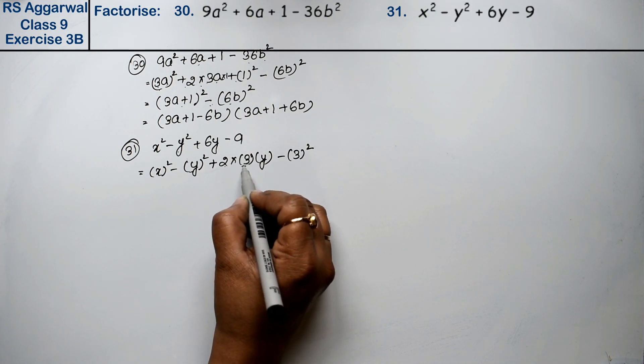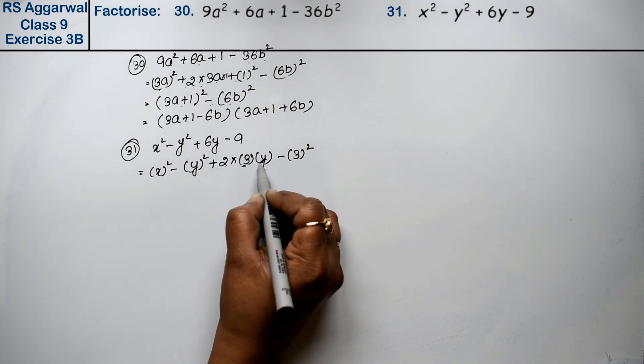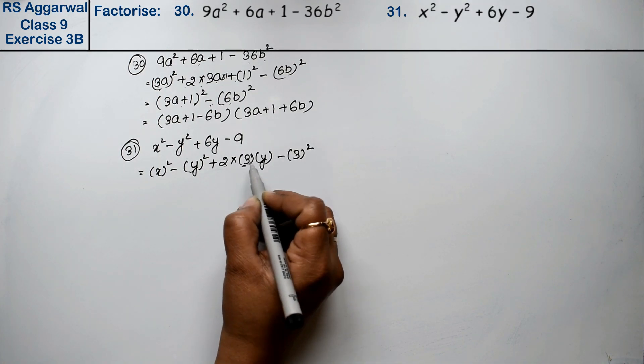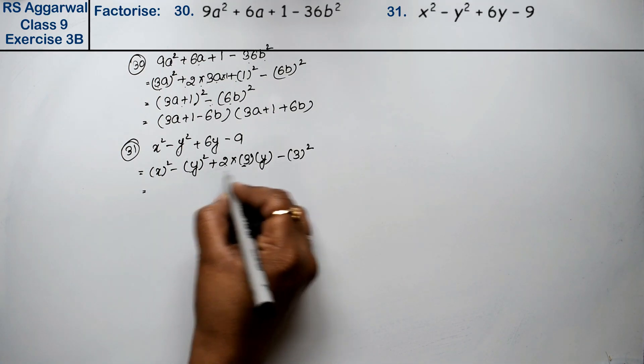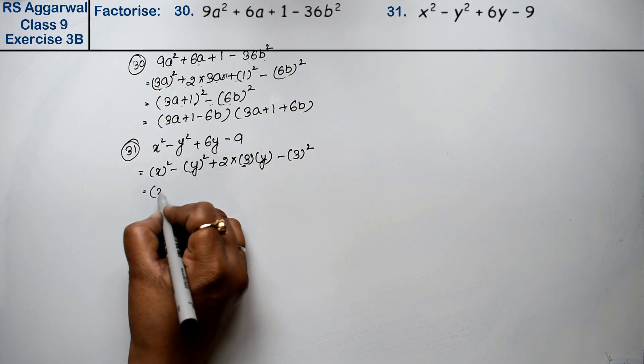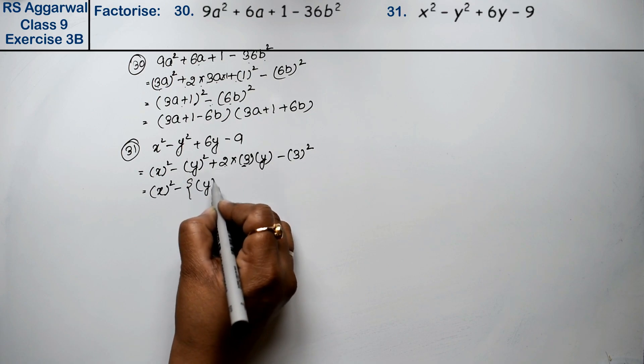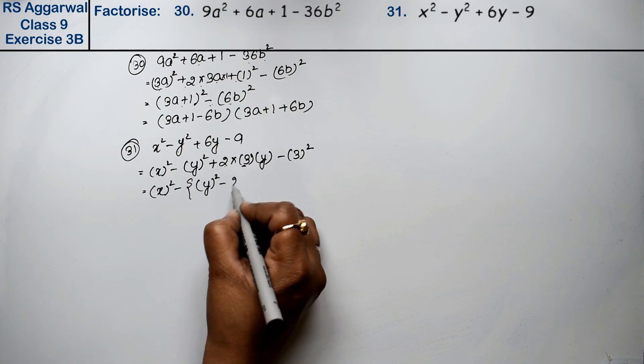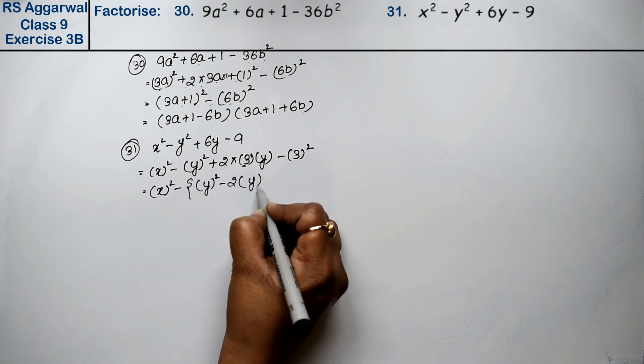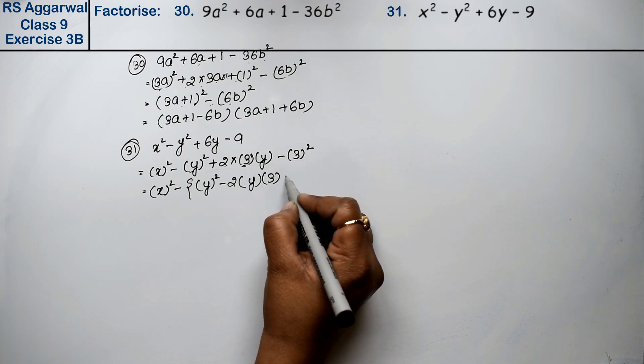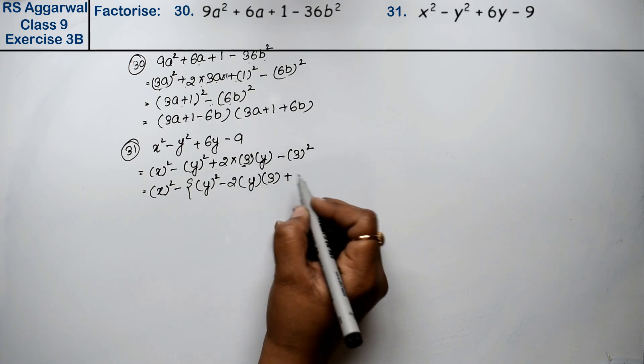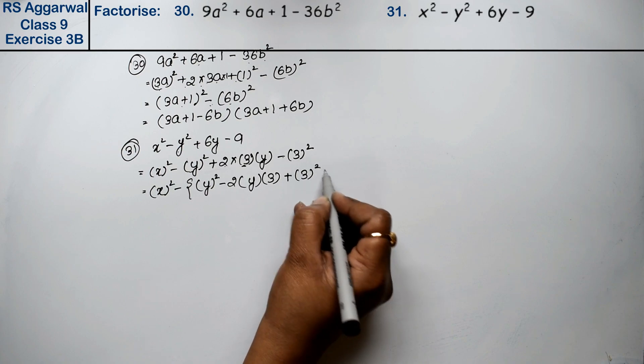Let's take y as a, so what is b? It's 3. So which three will we take? These three terms go in brackets. x² minus, we take common outside. So what does this become? y² - 2, in place of a I'm writing y, in place of b I'm writing 3, here. It becomes plus because we took minus outside, 3².